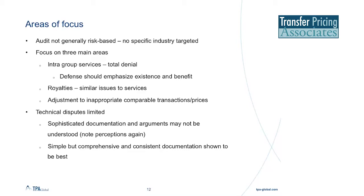In a similar way, royalty charges were often denied, and the focus of any defence should demonstrate the benefit, as well as the legal ownership of the IP and how the charge was reached. The final common adjustment type is the desire of tax auditors to force a comparable uncontrolled price or transaction, when proper analysis shows that large differences have not been considered or adjusted for. Overall, the number of adjustments based on full analysis where the question comes down to interpretation are very limited. If documentation or arguments are overly technical or complex, it can be seen as a smokescreen, and it's often best to keep documentation and supporting arguments as simple as possible — telling the story as it is becomes much more credible.